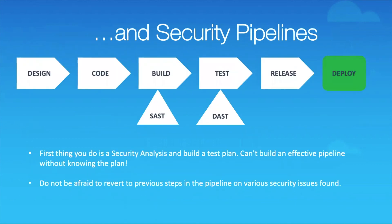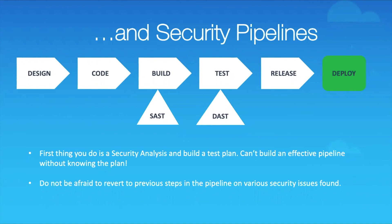Here's a security pipeline from 1,000 feet: design, code, build, test, release, and deploy — where deploy covers both staging and production. In the design phase, sit down with your security analyst and build a test plan. How are you going to test at each step? If you don't have an effective plan, the pipeline won't be effective — you'll get bottlenecks and stop-starts that could severely slow you down or break your pipeline entirely. Get the design right from the get-go.